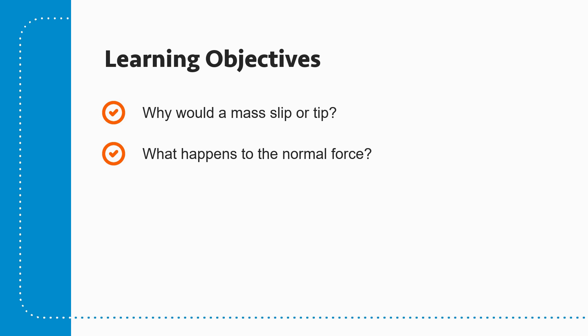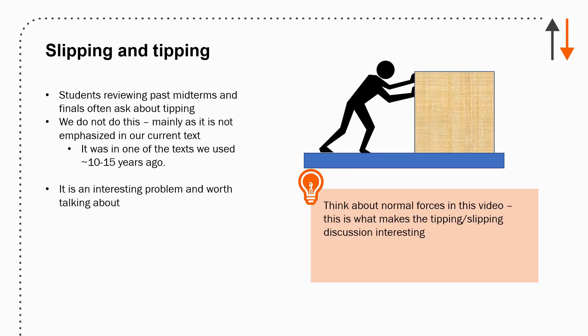And so the goal here is why would a mass slip or tip and what would happen to the normal force in that case? Again, if you review past midterms and finals, you're often asked about tipping. And then the question fairly comes out, which is, why don't we do this? And one of the reasons is that we often shift our textbooks and the idea is emphasized potentially in one text and not in another. And it was in the one text we used about 10, 15 years ago, and it is kind of a neat problem.